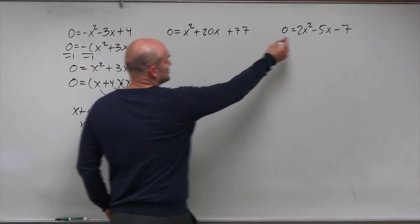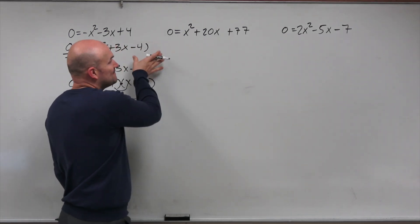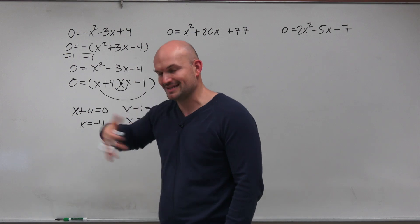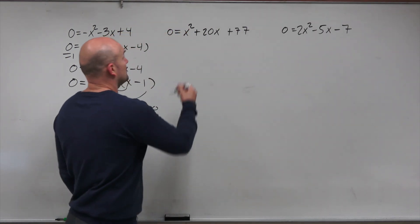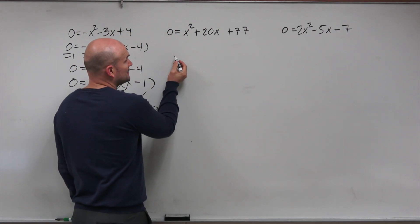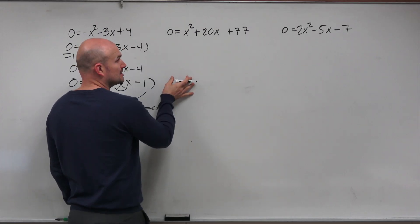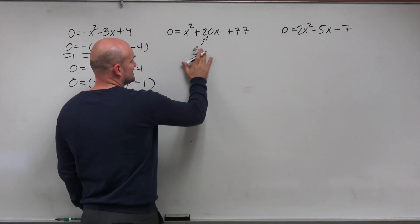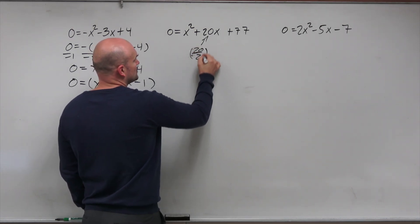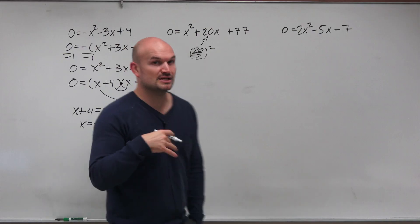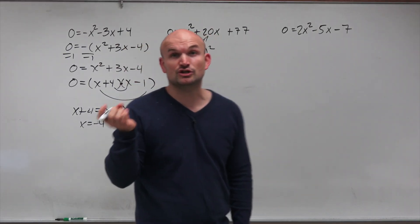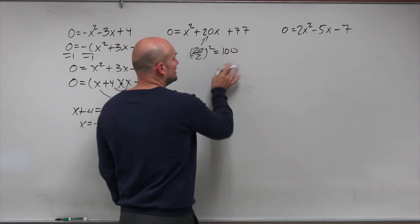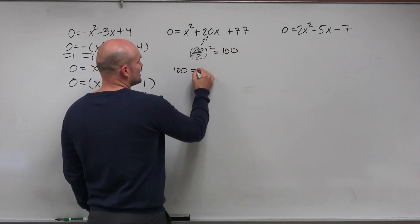Because I don't want to use the quadratic formula with really big numbers, and it's not factorable across real rational numbers, I'll use completing the square. What I'm going to do is take my middle term b, divide it by 2, and then square it. That produces a value that creates a perfect square trinomial. So 20 divided by 2 is 10, and 10 squared is 100. I'm going to add this value to both sides of my equation.